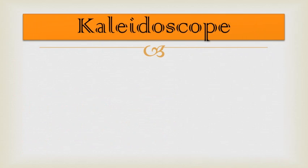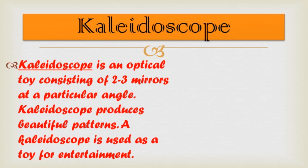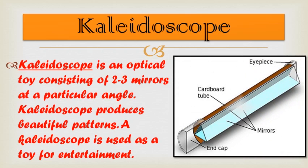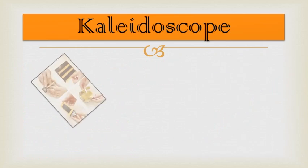Now a very interesting concept — the kaleidoscope. A kaleidoscope is an optical toy consisting of two to three mirrors arranged at a particular angle, which produces beautiful patterns. It is used as a toy for entertainment. Its structure includes an eyepiece at one end, an end cap at the other end, a cardboard tube, and three mirrors arranged in a triangular manner.